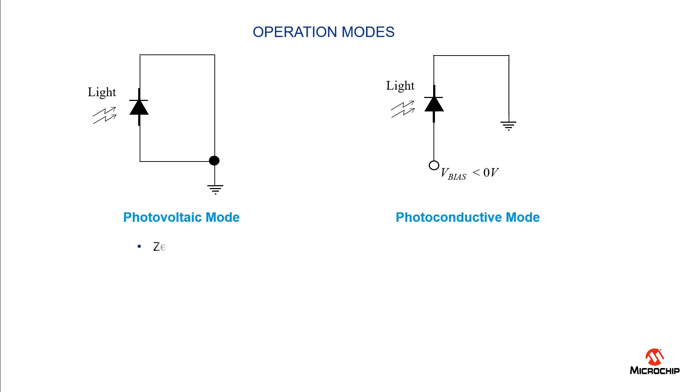For the photovoltaic mode, this has zero voltage potential across the photodiode, no dark current flows through the photodiode, the linearity and sensitivity are maximized, and the noise level is relatively low which makes it well suited for precision applications.